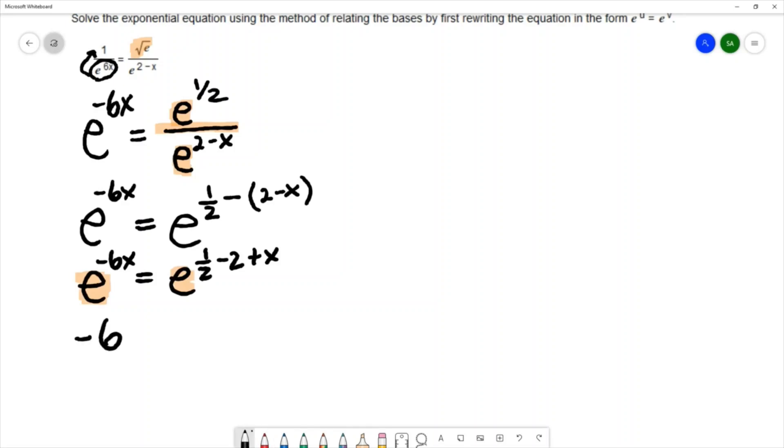So I can simplify the equation to be negative 6x equals one half minus 2 plus x. I have a linear equation. I'm going to start solving by getting rid of the fraction so I'll multiply by 2 on the left and multiply by 2 on the right.